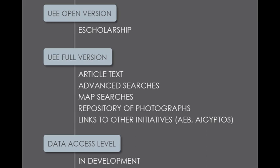Our hybrid model: we pursued NEH funding for four years to develop a pilot of this encyclopedia. We commissioned articles, developed prototypes, and hired copy editors, programmers, designers, and librarians. The reality of making UEE sustainable beyond the initial four years of funding meant deciding to use a hybrid model — a free version available through CDL's eScholarship, and a full subscription-based website with more features and services for users.